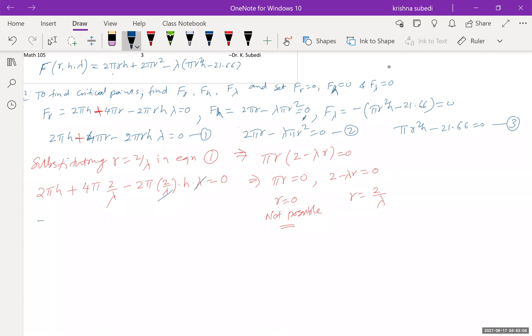So what do we get? So 2 pi h plus 4 pi times 2 over lambda minus 2 pi times 2 over lambda times h times lambda equal to 0. So this lambda and lambda can be cancelled out. So what do we get? We get 2 pi h plus 8 pi over lambda minus 4 pi h equal to 0.